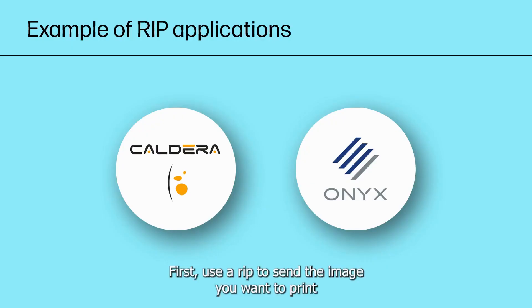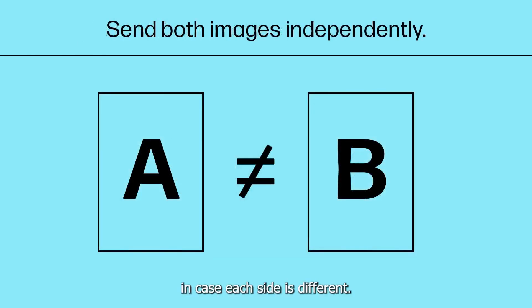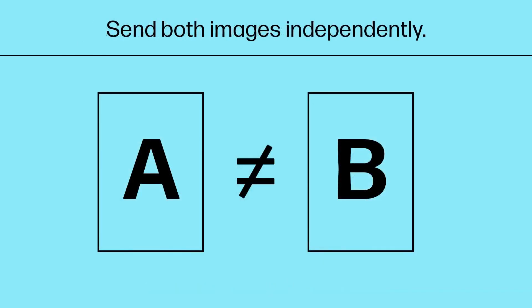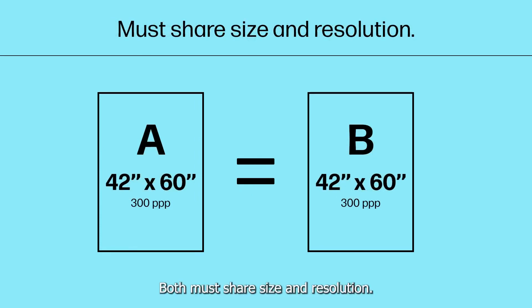First, use a RIP to send the image you want to print. In case each side is different, we will send both images independently. In case we send two images, both must share the same size and resolution.